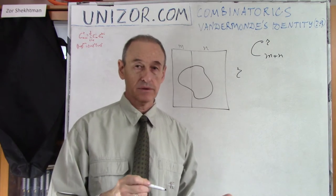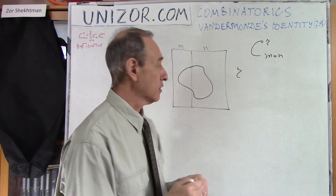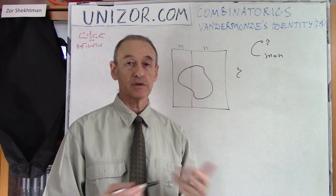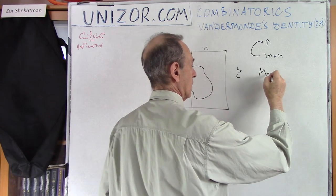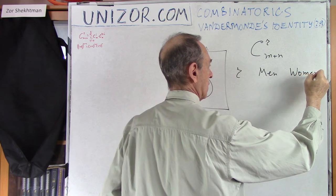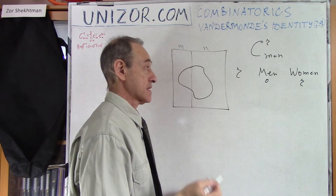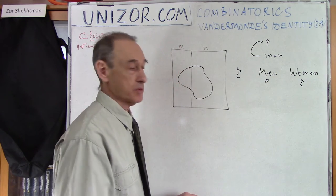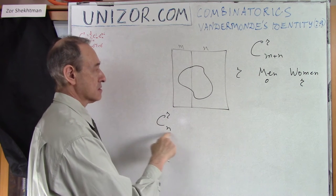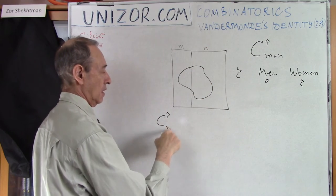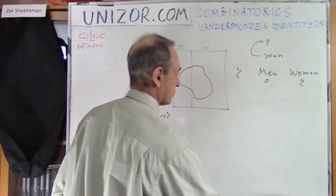On the other hand, you can approach this problem in a slightly more complex way — namely, you can take into account that you have two different types of people. So this group of R can contain zero men and R women. And there is a special number of groups of this type: it is the number of combinations from N women by R, which is C(N, R).